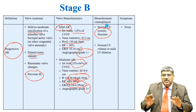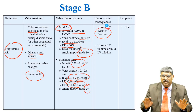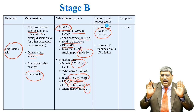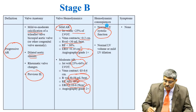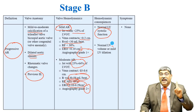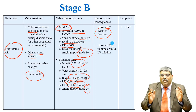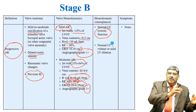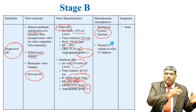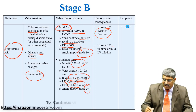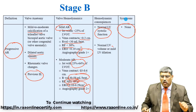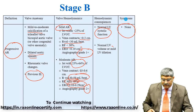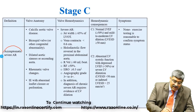The hemodynamic consequences in Stage B: LV systolic function is usually normal, with enough compensation present. The LV size will also usually be normal but with slight mild dilatation due to increased volume going into the left ventricle. The patient will be asymptomatic. This is progressive AR. Now coming to severe AR.